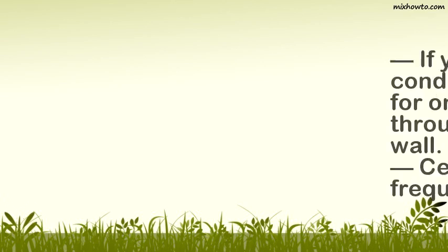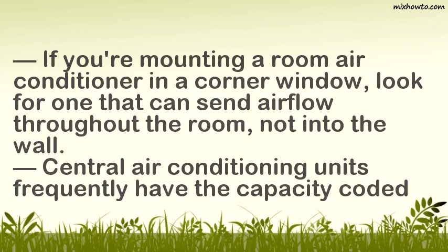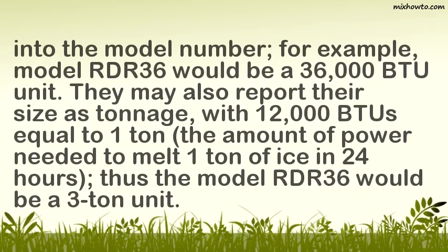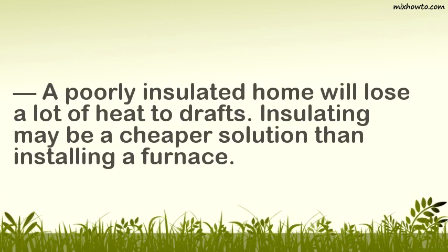Tips: If you're mounting a room air conditioner in a corner window, look for one that can send airflow throughout the room, not into the wall. Central air conditioning units frequently have the capacity coded into the model number; for example, model RDR-36 would be a 36,000 BTU unit. They may also report their size as tonnage, with 12,000 BTUs equal to 1 ton — the amount of power needed to melt 1 ton of ice in 24 hours. Thus the model RDR-36 would be a 3-ton unit. A poorly insulated home will lose a lot of heat to drafts; insulating may be a cheaper solution than installing a furnace.